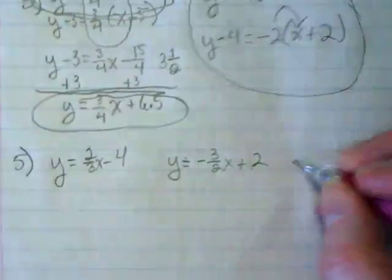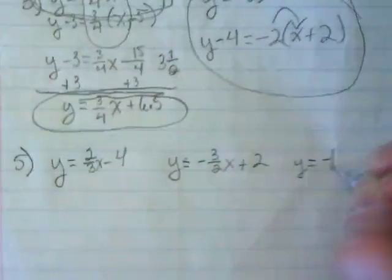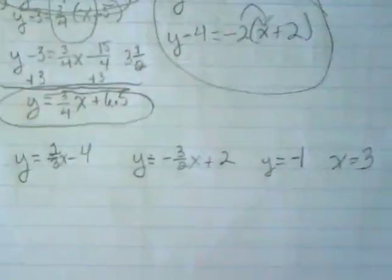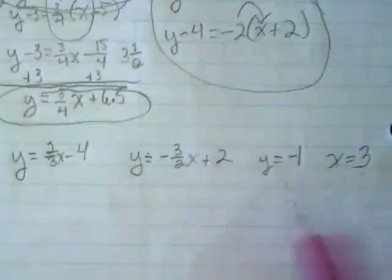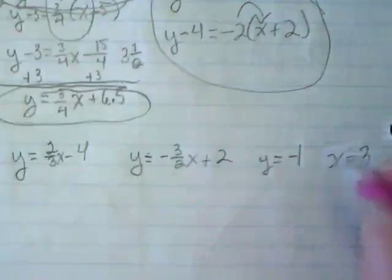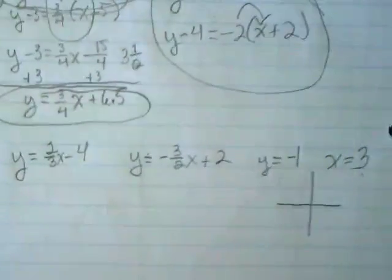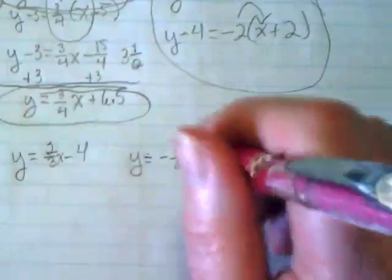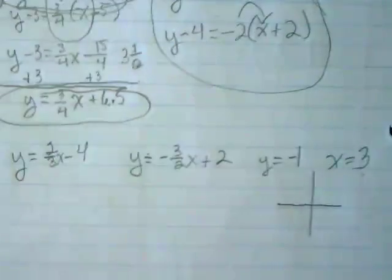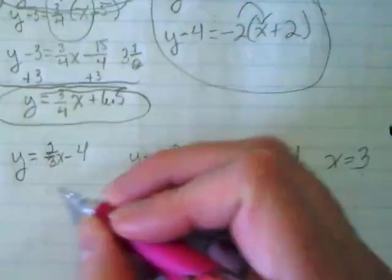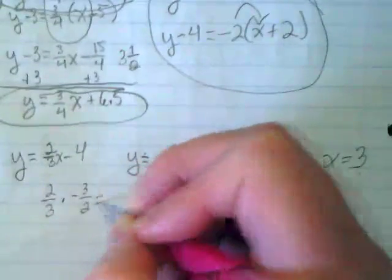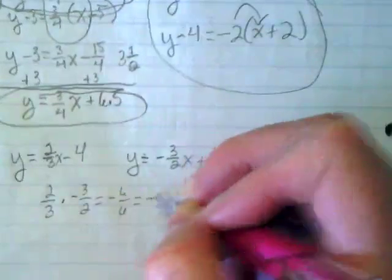What are the other equations? Y equals negative 1, X equals 3. These two would be perpendicular because they're going to be undefined and 0. These two would be perpendicular because they have these opposite slopes, the negative reciprocal. How can I prove it? 2/3 times negative 3/2 gives me negative 6/6, which is equal to negative 1.